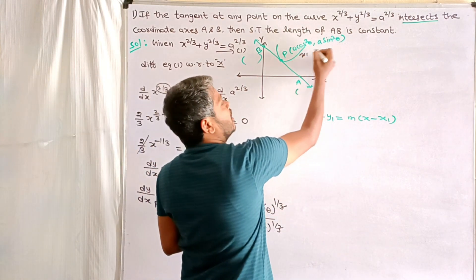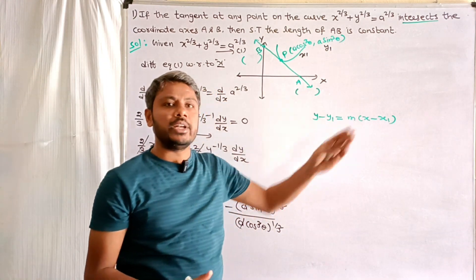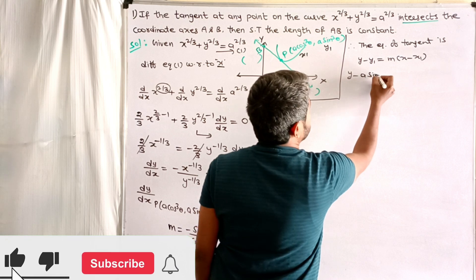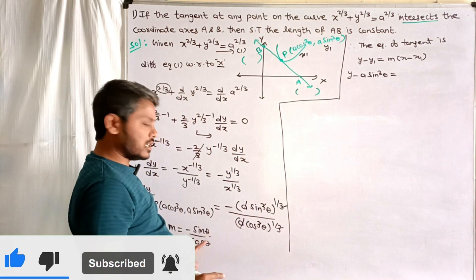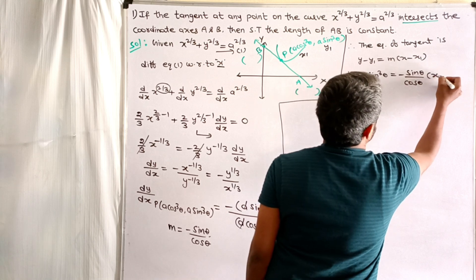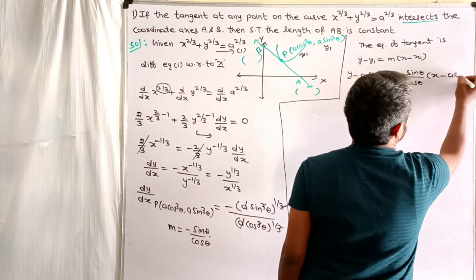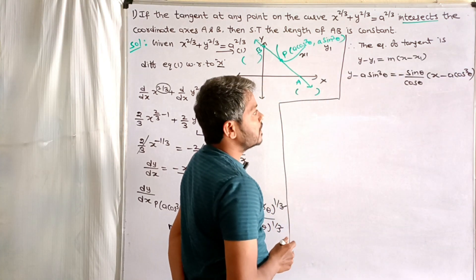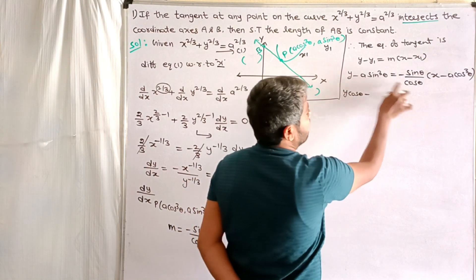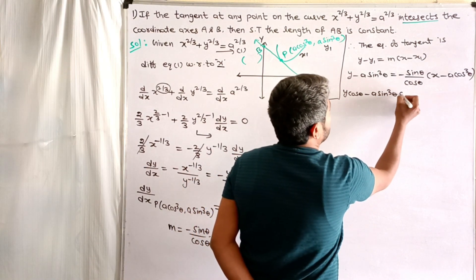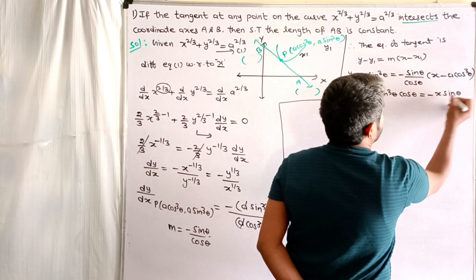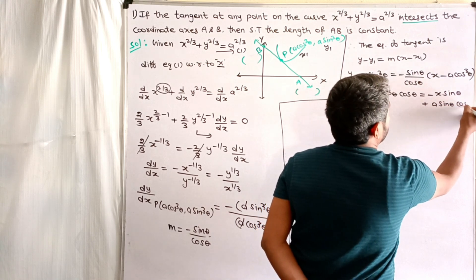We have the point (x₁, y₁) = (a cos³θ, a sin³θ) and slope m = -sinθ/cosθ. Write the equation of the tangent: y - a sin³θ = (-sinθ/cosθ)(x - a cos³θ). Cross-multiplying: y cosθ - a sin³θ cosθ = -x sinθ + a sinθ cos³θ.